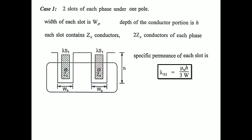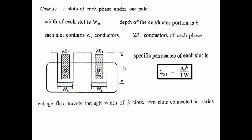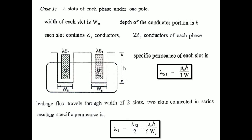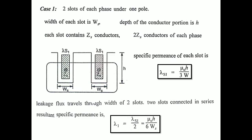The leakage flux of the two slots is connected in series, so for the resultant specific permeance we divide by 2. The value becomes: λ₁ = λ_s1 / 2 = μ₀·H / (6·Ws). This is the specific permeance value for a phase having two slots, considered as lambda_1.